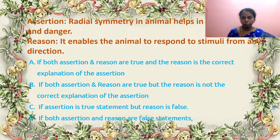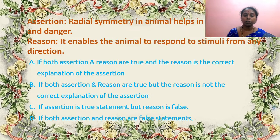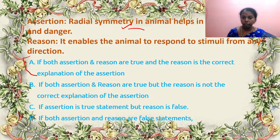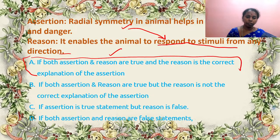Radial symmetry in animals helps in detecting food and danger as they can move their body at any angle. Reason: it enables the animal to respond to stimuli from any direction. Because of radial symmetry it can respond to stimuli from any direction — that is also a correct statement and explains the assertion. So A is the correct answer.